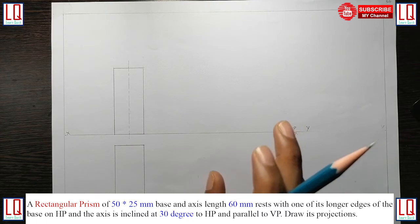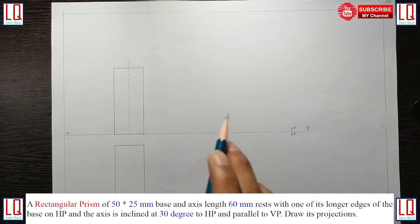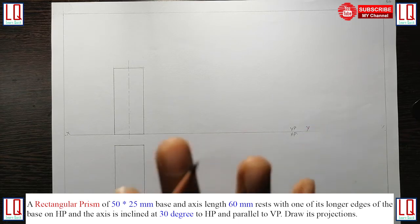So from this statement, we understand the solid type is of prism and of shape rectangle. And the dimension of the rectangle is given as 50 x 25 mm. And the axis length of this prism is 60 mm.